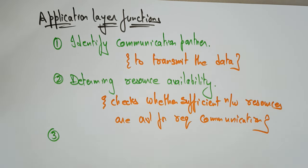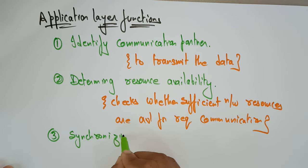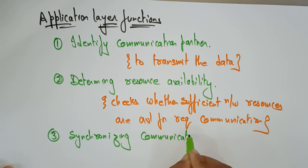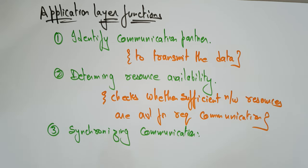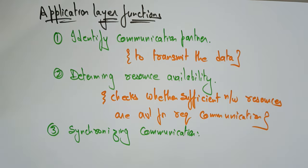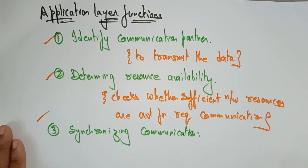The next function the application layer performs is synchronizing communication. All communications that occur between applications require cooperation, which is managed by the application layer. Different information coming from different layers — the application layer manages that cooperation between applications. These are the three different functions the application layer performs.